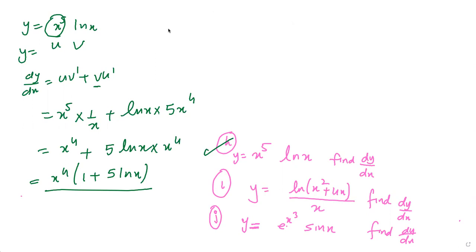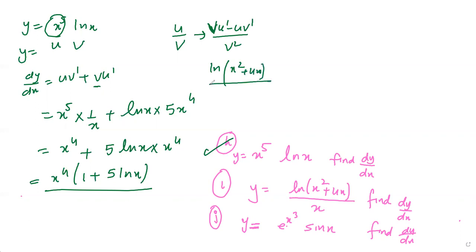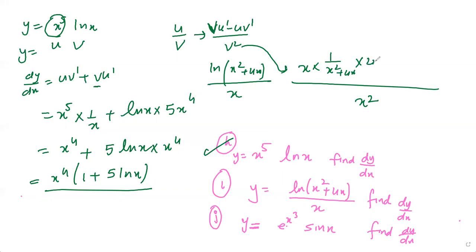For part i, use the quotient rule: the derivative of u/v is (v·u' minus u·v') over v². Note that the order matters — v comes first. Differentiating ln(x² + 4x) over x: v is x, so it's x times [1/(x² + 4x) times (2x + 4)] minus ln(x² + 4x) times 1, all over x². Then take x common, cancel, and simplify using LCM.